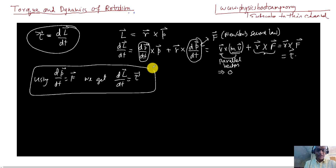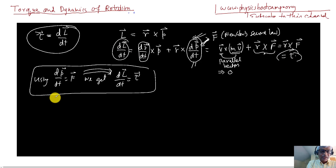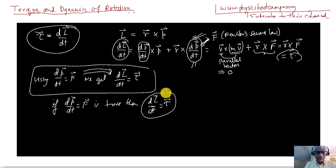This result implies: if dp/dt = F is true, then dL/dt = torque is also true. Torque tells you how the angular momentum vector changes — it twists or changes the direction and magnitude of the angular momentum.